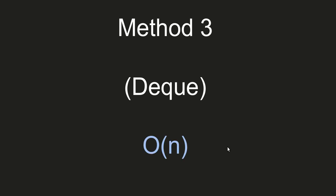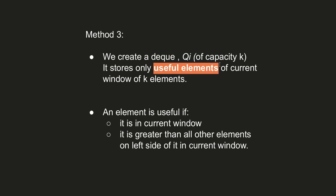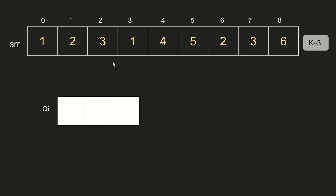Method 3 uses a deque (dq) and is much more efficient than the previous two methods, with a time complexity of just O(n). We start by creating a deque of capacity k. The deque stores only useful elements of the current window — an element is useful if it is in the current window and is greater than all other elements to its left in that window. For this example, the array has size 9 and k is 3, so we make a deque of capacity 3.